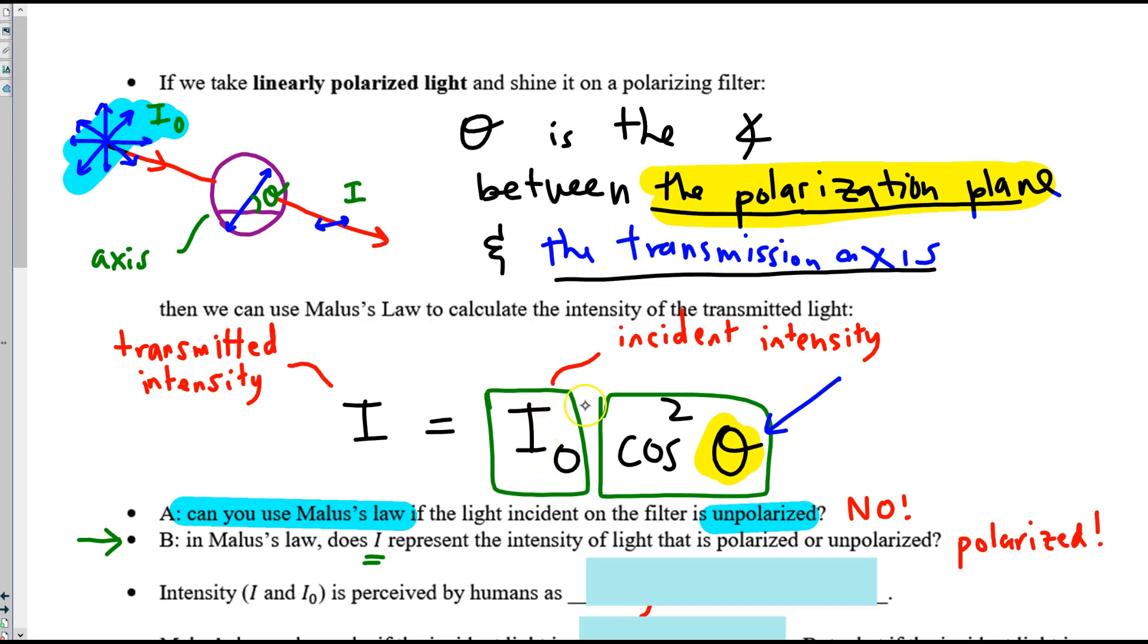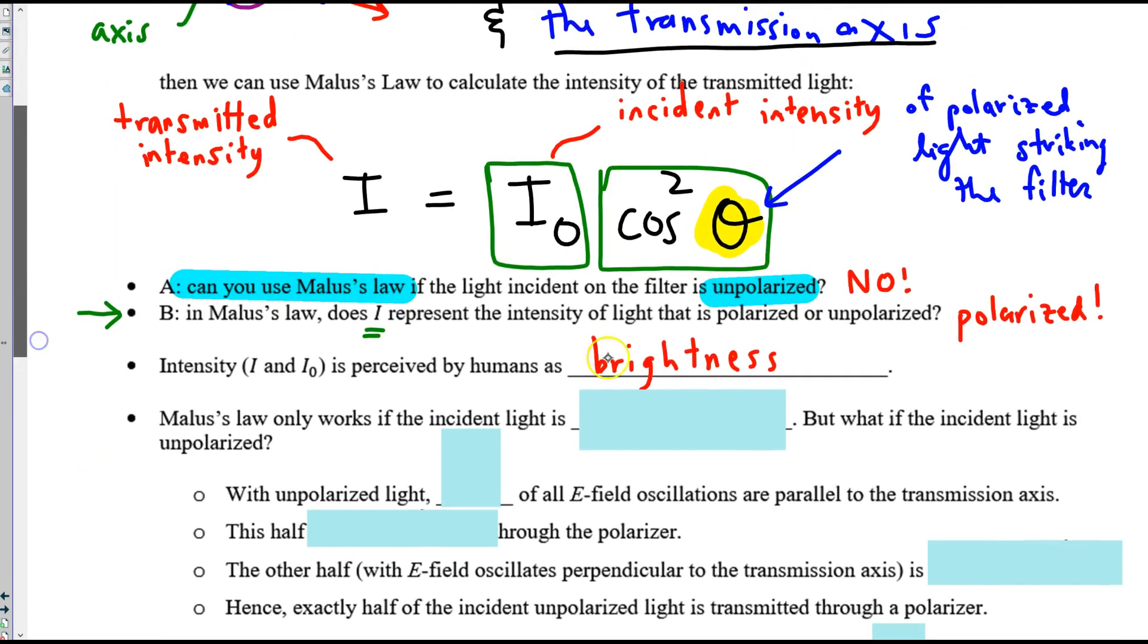We can even add right here, this is the incident intensity of polarized light striking the filter. Intensity is perceived by humans to be brightness. So, if you send the light through a filter and some gets filtered out, we would see that light as less intense or less bright.